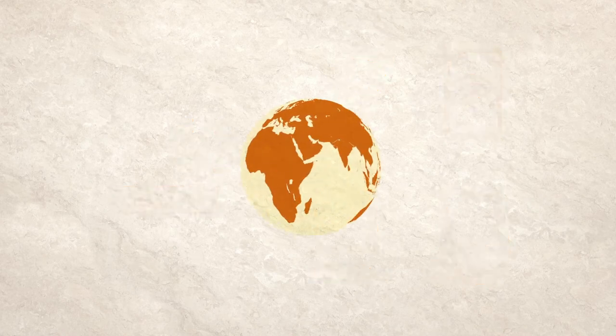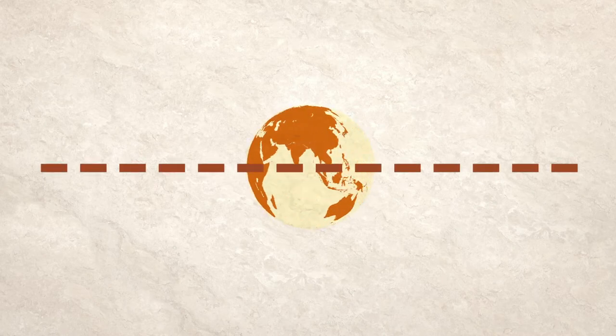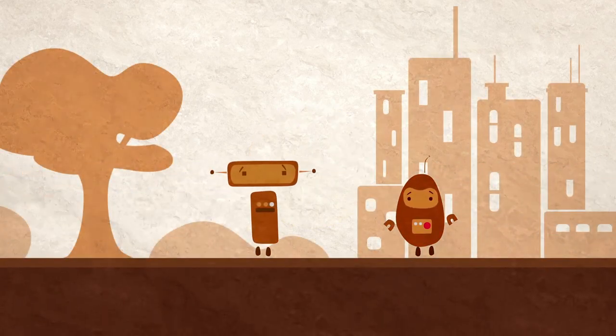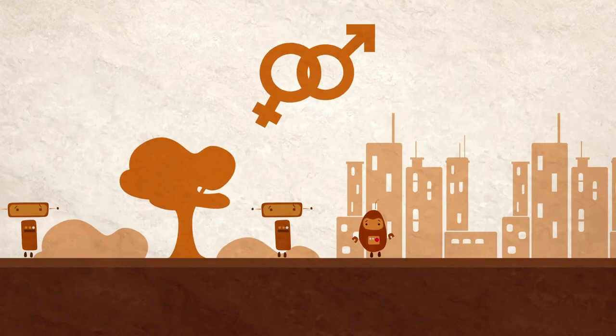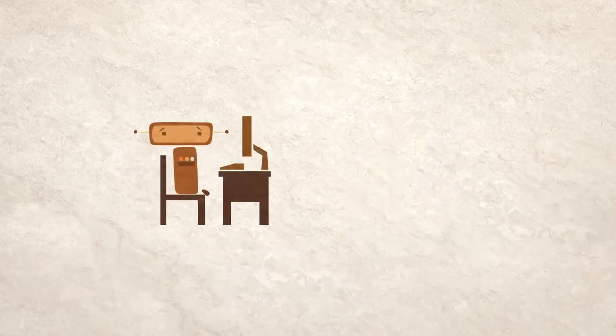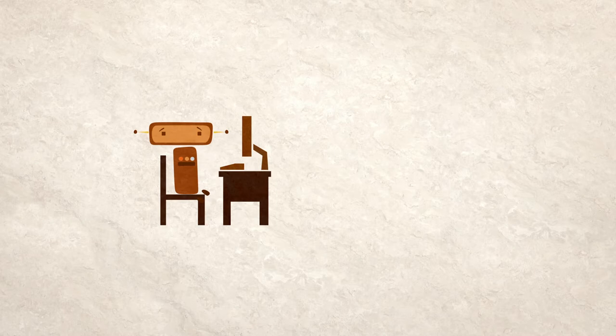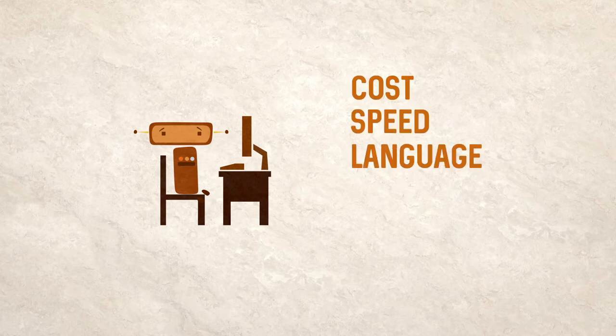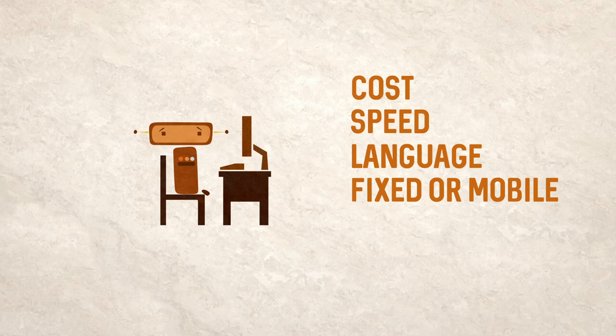But a decade on, it's become clear that there are in fact many digital divides. There's the big one between the global north and south, but there are also divides between rural and urban areas, between genders and between different racial groups. Even among those connected, there are enormous differences in access, in terms of cost, speed, language, whether it's a fixed or mobile connection, and increasingly, quality, which we'll look at in more detail later in the video.